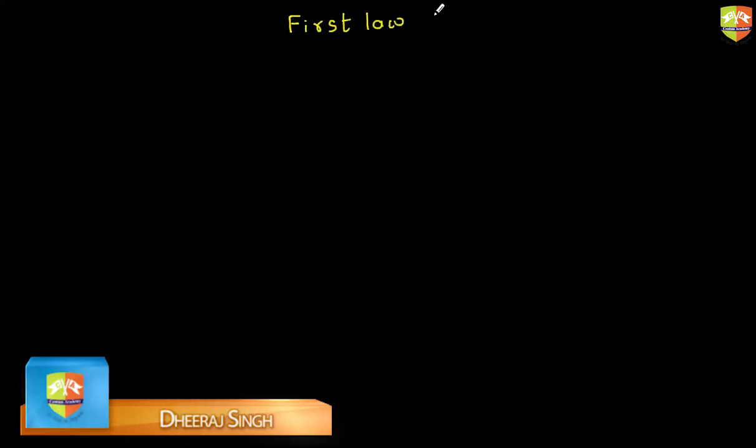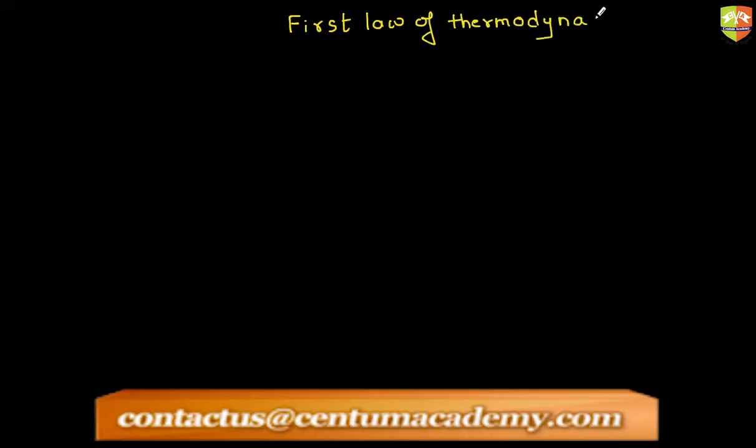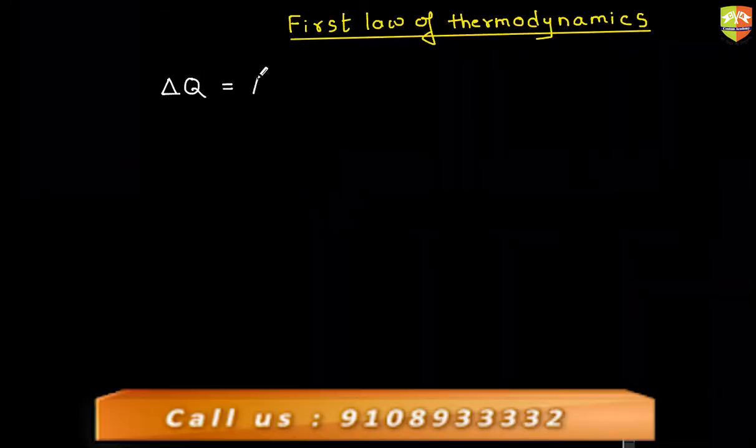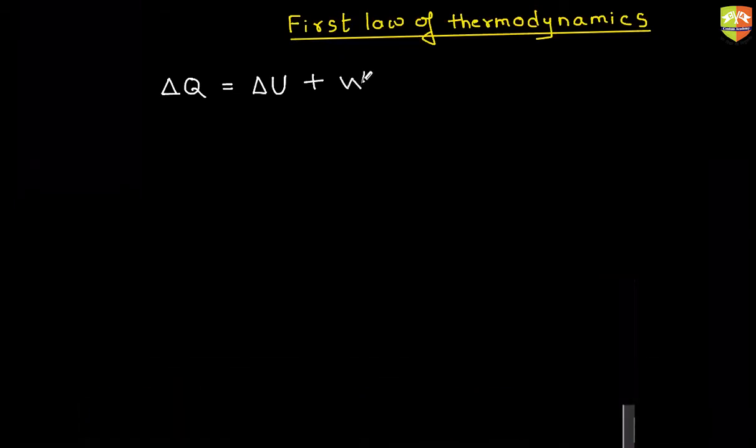First law of thermodynamics. It states that if to a thermodynamic system, if I supply delta Q amount of heat, some amount of heat will be utilized to increase the internal energy and part of it will be used to do some work. So this is the first law of thermodynamics.